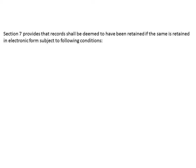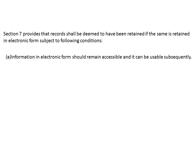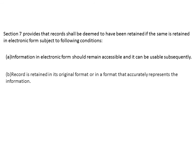For this question, you need to write: Section 7 provides that records shall be deemed to have been retained if the same is retained in electronic form subject to the following conditions. First condition: it should remain accessible and it can be usable subsequently. Second condition: the record is written in its original format or in a format that accurately represents the information.